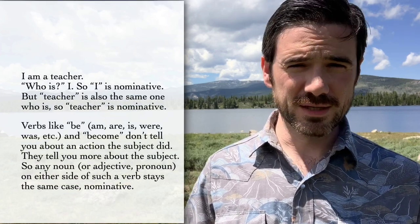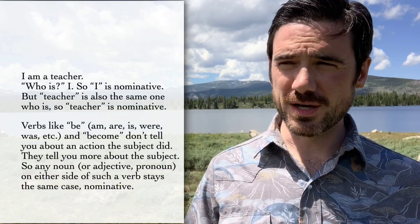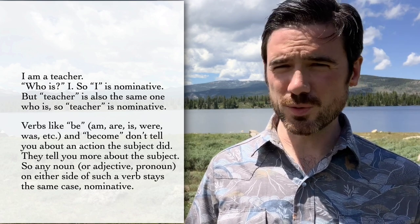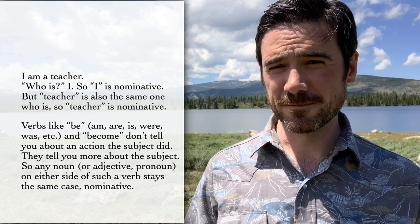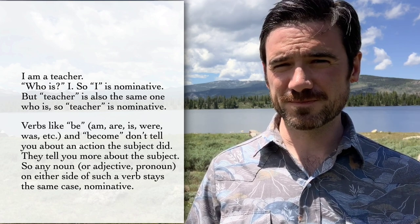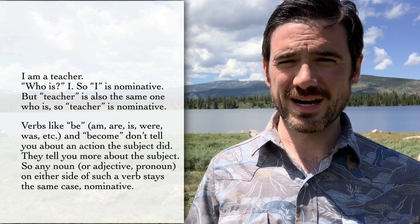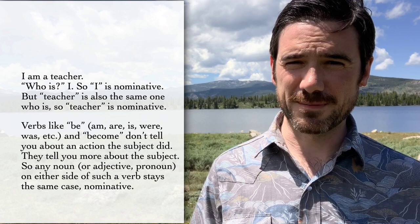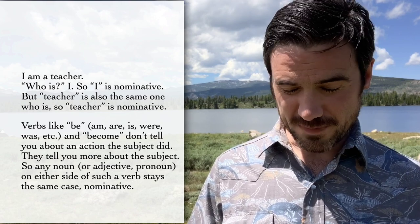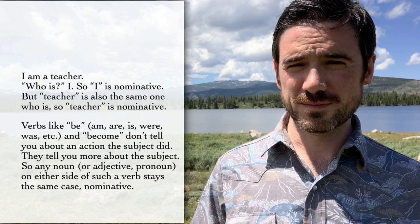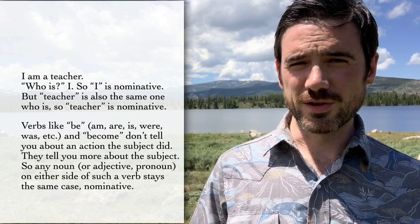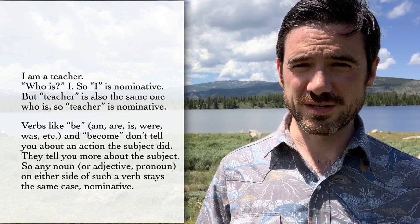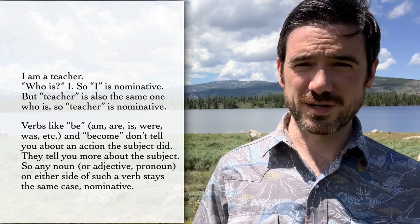Keep in mind that 'is' and other forms of the verb 'be' — was, were, are, be, as well as 'become' and 'becomes' — are basically equal signs. There's no action there. So 'I am a teacher': the verb is 'am,' 'I' is the subject or nominative, but 'teacher' is also nominative because it's just renaming me — I'm not doing something to a teacher, there's no action happening there. So the verb 'be' and its forms — is, are, be, am, will be, was — those are all just equal signs. You don't change the case on the other side of those; they're still going to be nominative on either end.